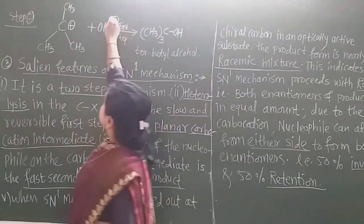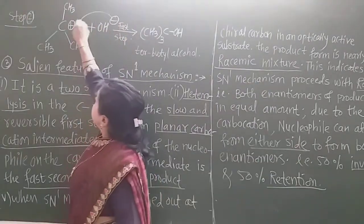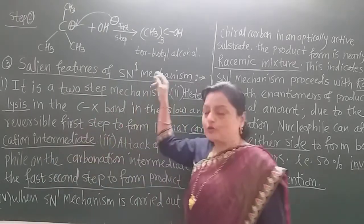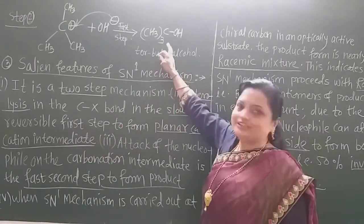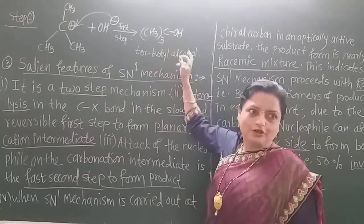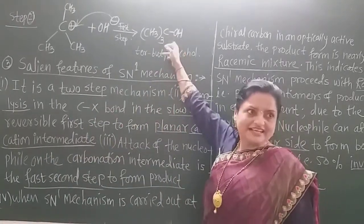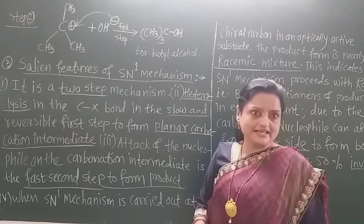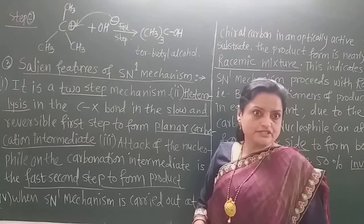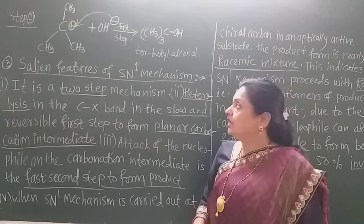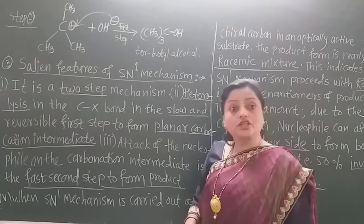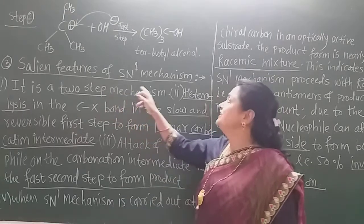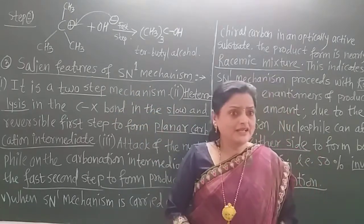The OH minus attacks on the carbocation and there is formation of tertiary butyl alcohol — OH gets attached here. Now, what is in the third point? These are the salient features of the SN1 mechanism.